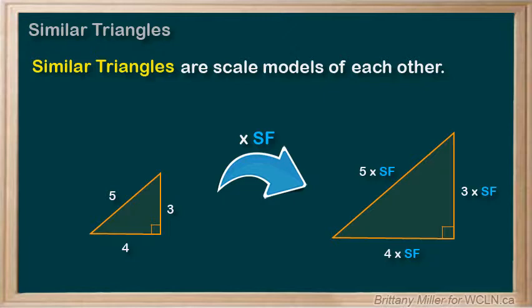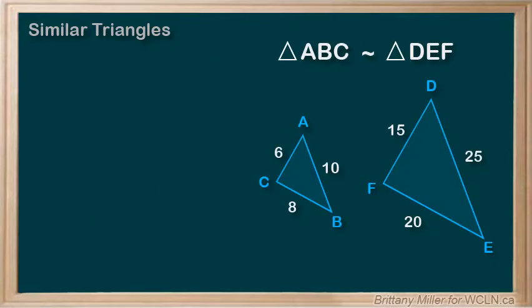Another way to say this is that corresponding sides of similar triangles have been scaled by the same factor. For example, these two triangles are similar. If we pretend that triangle ABC is the original triangle and that triangle DEF is an enlargement, what would the scale factor be?